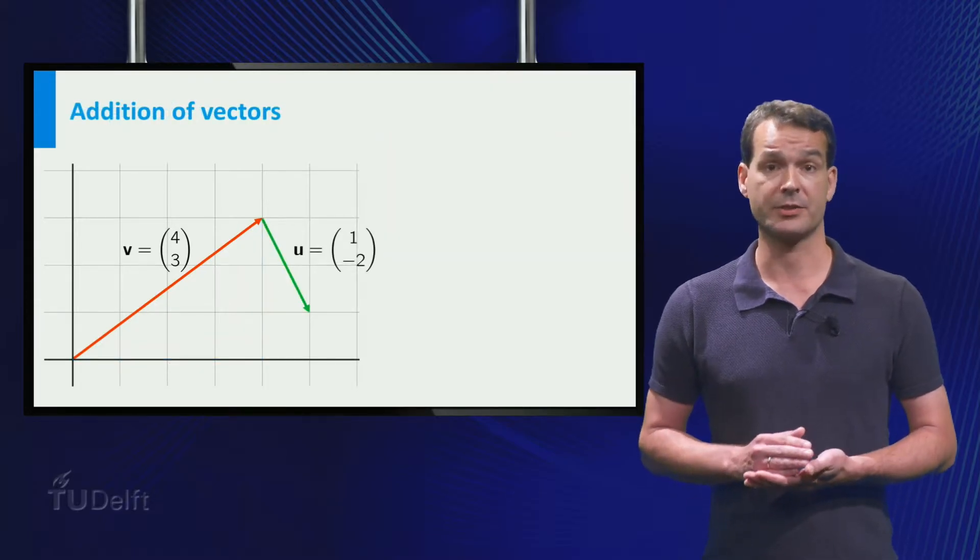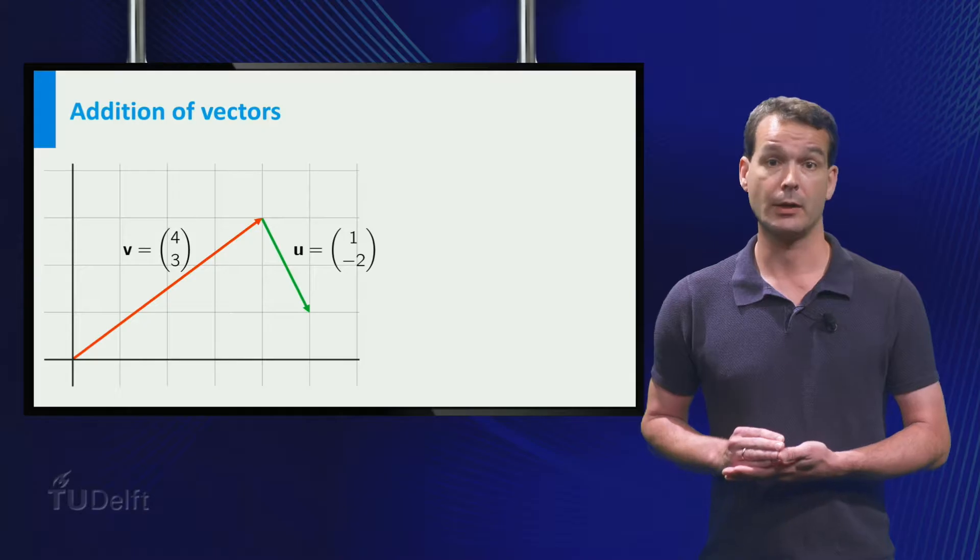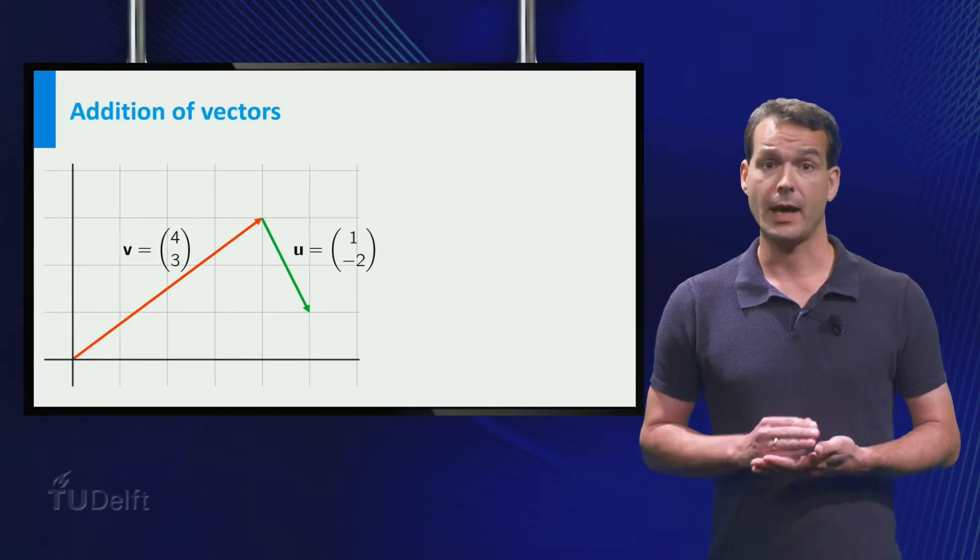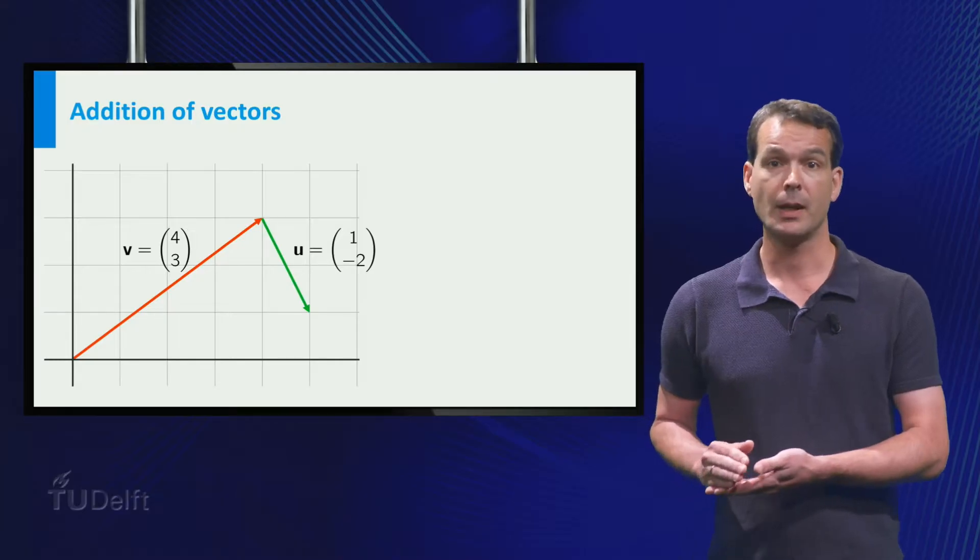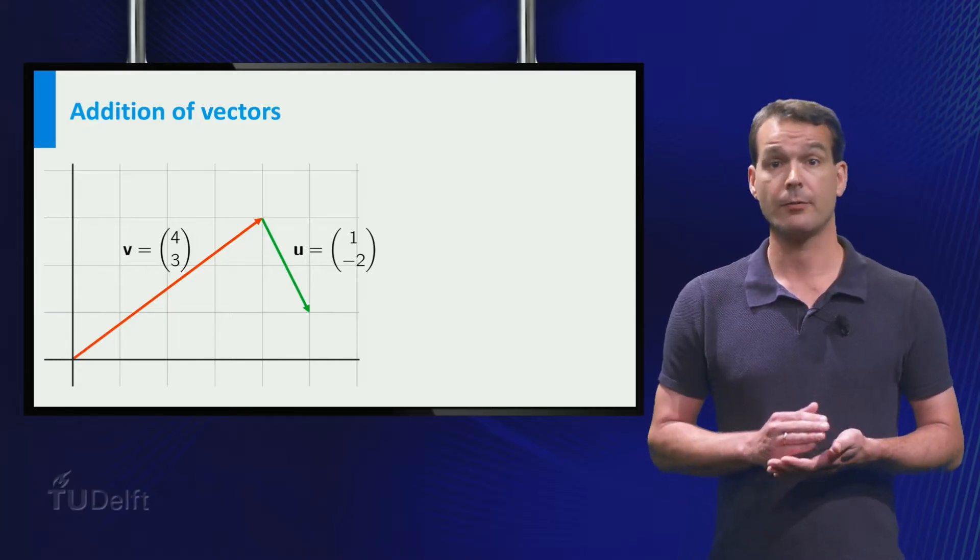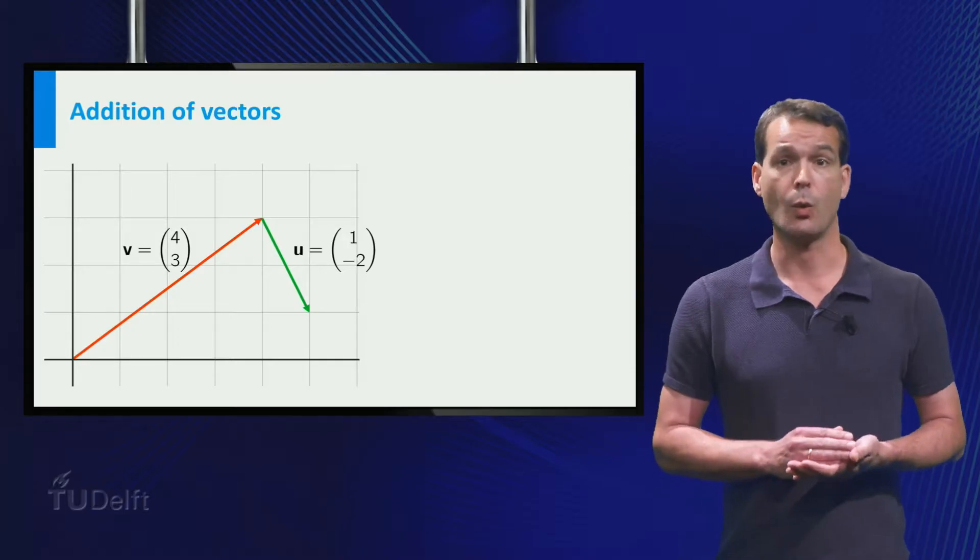Next let's consider addition of two vectors. You have seen that geometrically adding two vectors means that we place them head to toe. So let's do this with the vectors v and u.